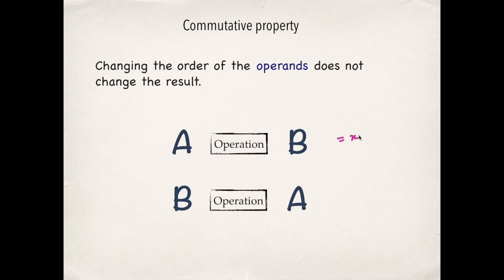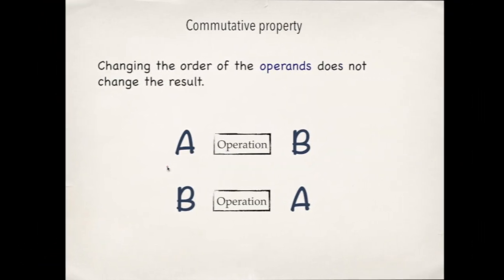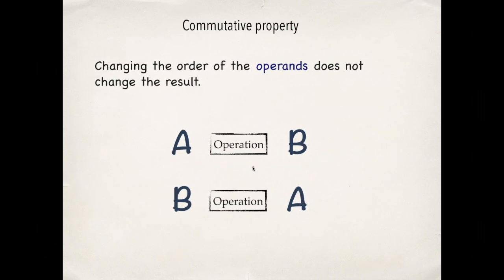So if this value is x then this value should also be x if A and B commute under this operation. Now in this question, operands are matrices and operation is multiplication.